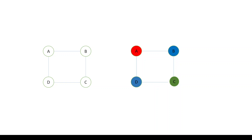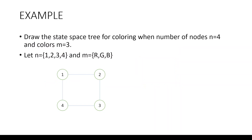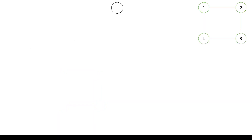Now let's find all different solutions possible for graph coloring using a state space tree. The question is: draw the state space tree for coloring when number of nodes n equals 4 and colors m equals 3. We have four vertices 1, 2, 3, and 4, and the colors are red, green, and blue. Let's start with the first node and assign it the color red, so x1 equals red.